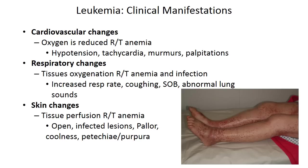Cardiovascular changes are often related to decreased red blood cell counts or anemia and include hypotension, tachycardia, heart murmurs, and heart palpitations. Respiratory changes can also occur related to infections and anemia. Infections such as bronchitis or pneumonia are common because patients are immunosuppressed, and you may notice increased respiratory rates, shortness of breath, coughing, or adventitious lung sounds such as wheezing and crackles.